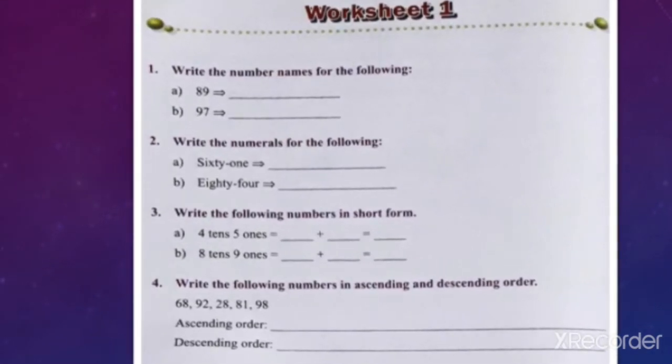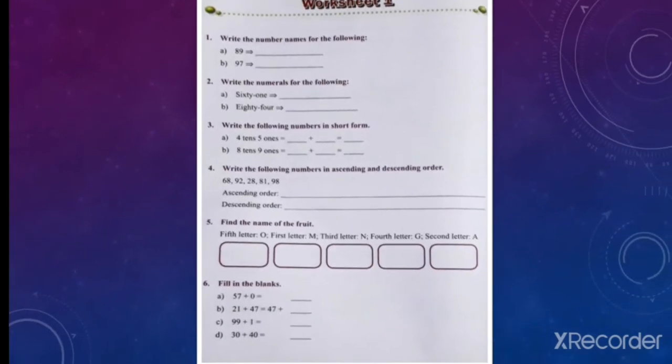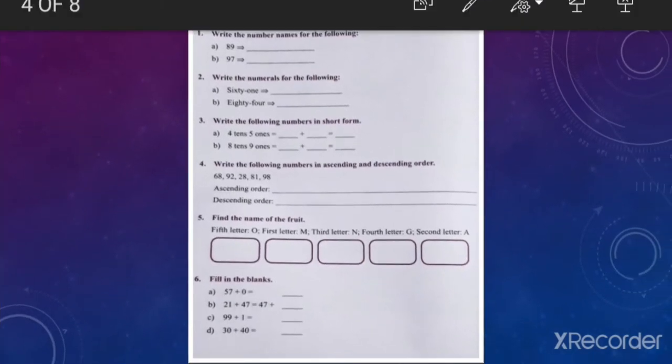Write the number names for the following. Children, here you have to write in words, okay? Like, first one, 89, okay? So you have to write 89 in spelling, like this.